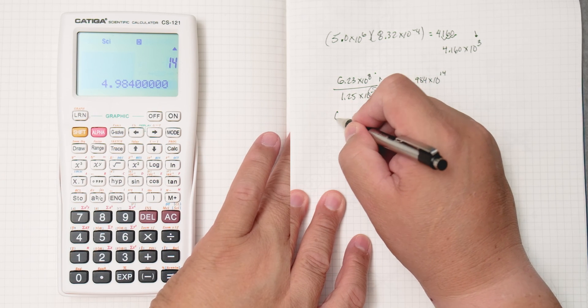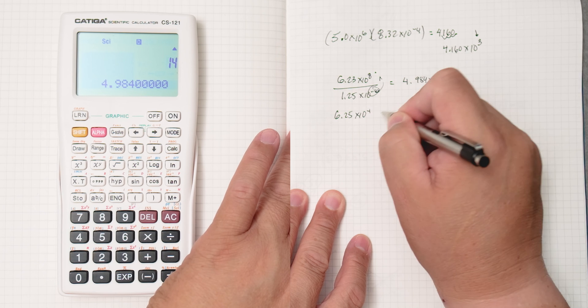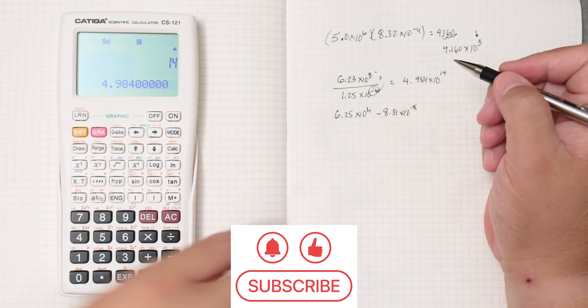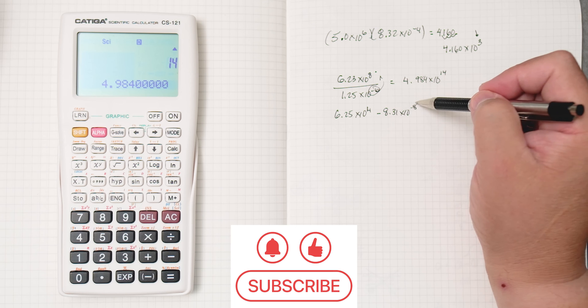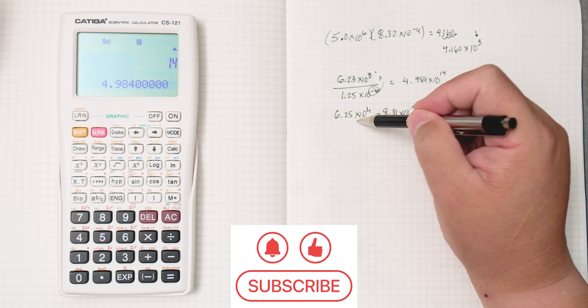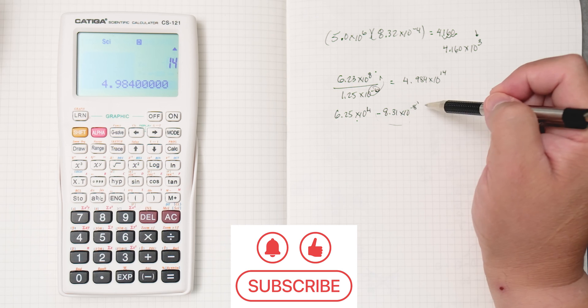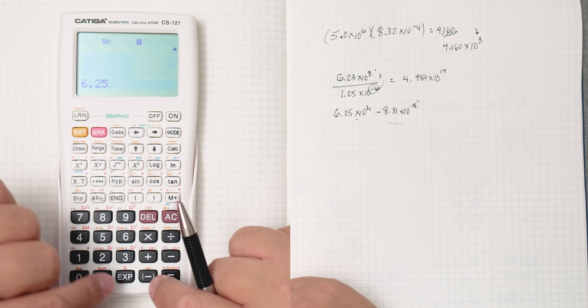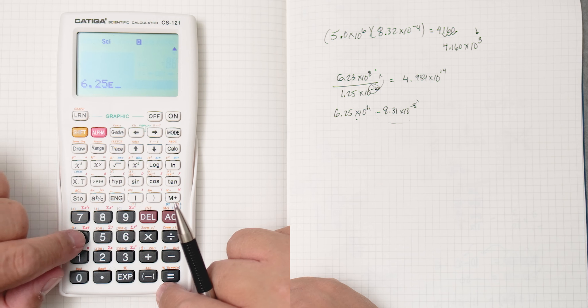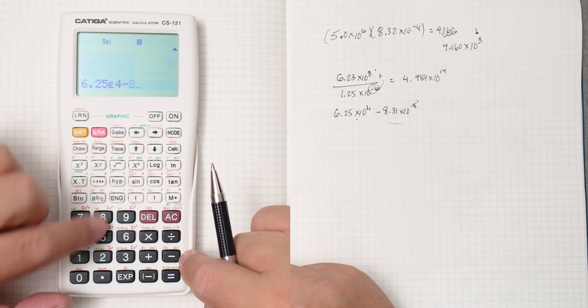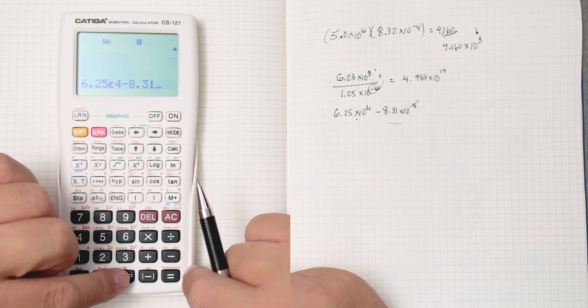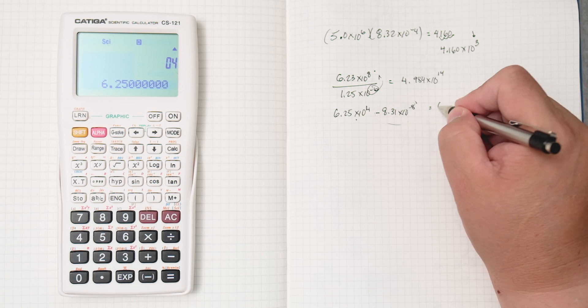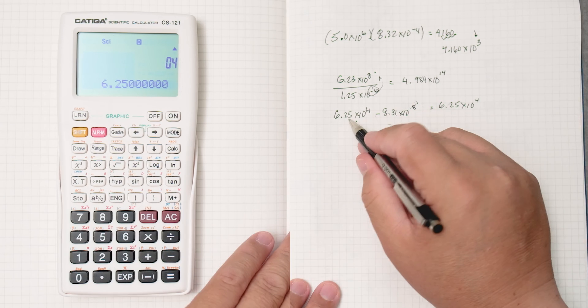Okay, so what about subtraction? 6.25 times 10 to the 4th, take away 8.31 times 10 to the minus 8th. We'll find out very quickly that this is a very small number, and it doesn't take away anything from here, and it looks like it's going to be the same answer. Let's see, 6.25 and then times 10 to the 4th, take away 8.31 to the power of negative 8. And you can see it's 6.25 times 10 to the 4th, same answer as this one.